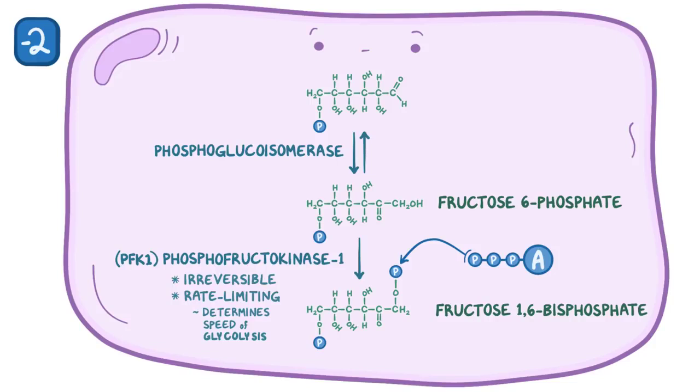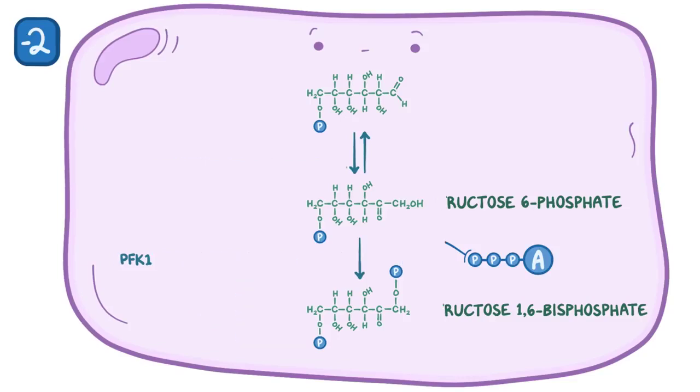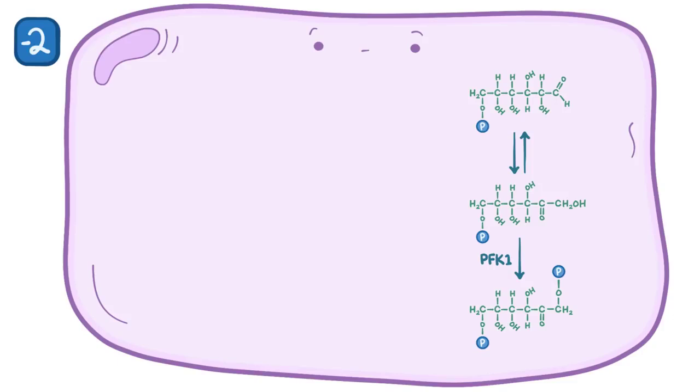It's kind of like an assembly line in a factory. If the slowest step is putting tires on a car, then that's the step that determines how many cars get built in a day. Because of this, cells closely regulate PFK1 activity by using another enzyme, called phosphofructokinase-2, or PFK2.